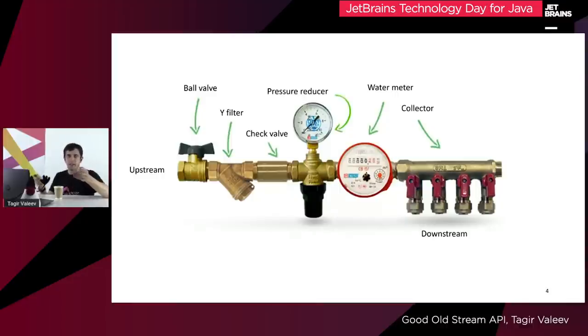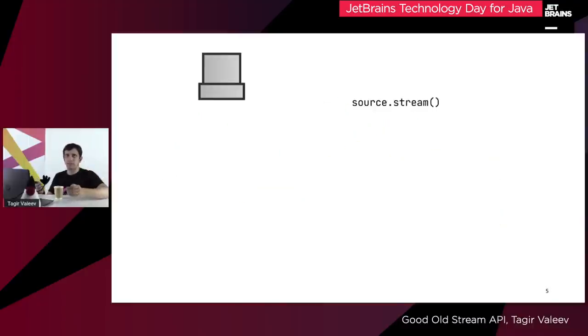One of the things I love most about the Stream API is that it's composable. It's somewhat similar to water supply fixtures — you have a set of compatible pieces that you can connect together to make a single pipeline. Even the component names are quite similar. For example, you have filters, reducers, and even collectors. If you really want, you can even attach a downstream collector.